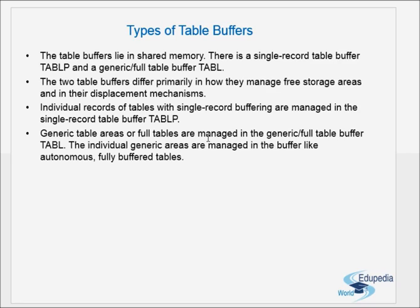When we talk about generic or full table buffering, the full tables are managed in this type of buffering. So individual records are managed in single record table buffering, and the full tables are managed in generic buffering. The individual generic areas are managed in the buffer like autonomous fully buffered tables.